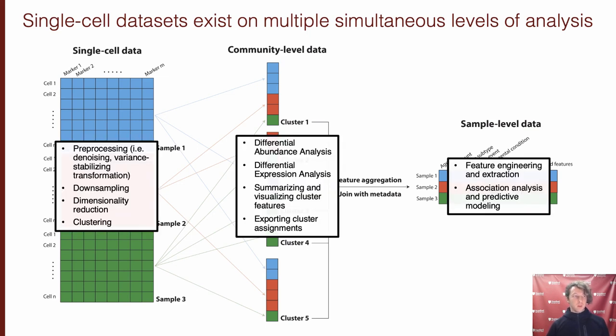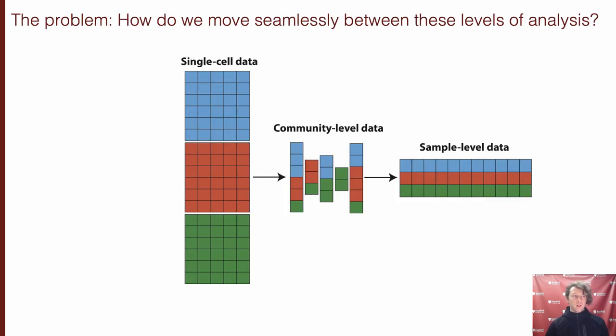For example, you generally want to perform data cleaning and pre-processing at the level of single cells, whereas at the community and sample level, you're usually more interested in using statistical and modeling tools to associate high-level feature information with a variety of biological or clinical outcomes. So I hope all of this paints the picture that at least in my mind, the problem at the core of single cell data analysis is really about how you move seamlessly, intuitively, and reproducibly between these different levels of analysis.